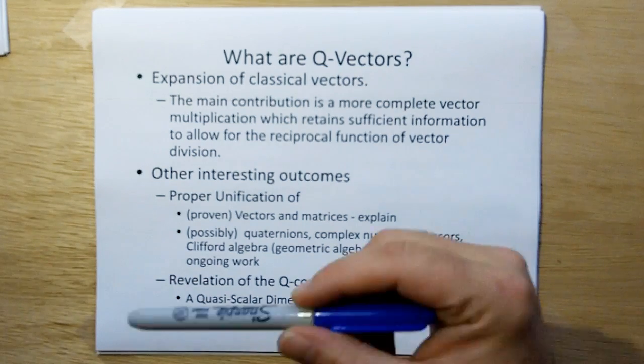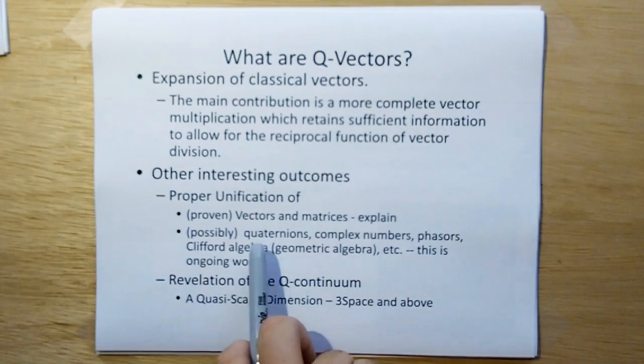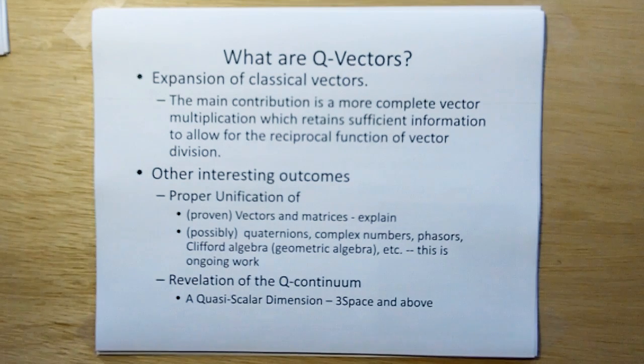Other interesting outcomes is we end up with a proper unification of vectors and matrices. This is different than the unification you might be thinking of. In classical mathematics, a vector is considered a matrix of one row or one column. I'm going to show you that that is ridiculous and leads to all kinds of problems. I'm going to show you there's a different way to unify vectors and matrices that make sense from a dimensional standpoint.